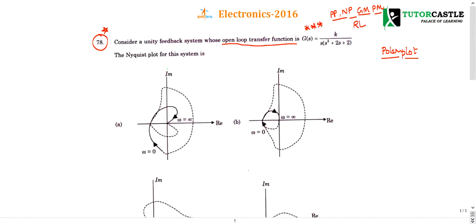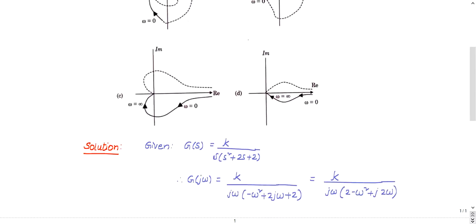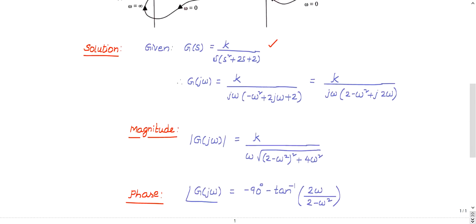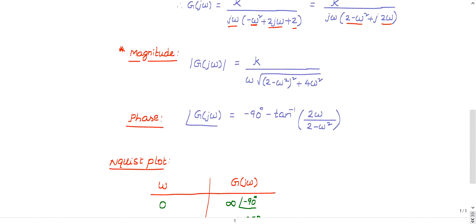Let me go to this problem. I have considered this open loop transfer function as it is. Then I converted from the S domain to the omega domain by replacing S with jω. jω whole square is nothing but minus ω². 2 into S is nothing but 2jω. I kept 2 as it is. Then I separated the real parts and imaginary parts. Now take the magnitude and phase — that is an important step.